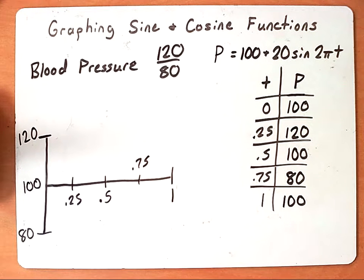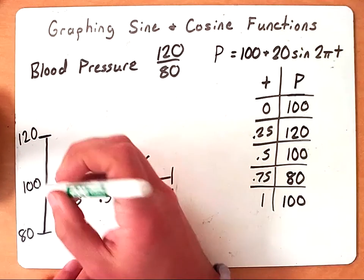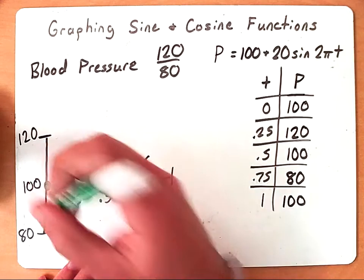So now we just want to graph this person's blood pressure. So I just go to my t-chart that I've made. At time 0, which will be here on the y-axis, we're at 100. So we put the dot there.